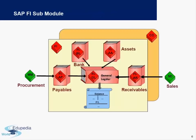Within the SAP Finance module we have various sub-modules: Accounts Payable, Accounts Receivable, Asset Accounting, and Bank Accounting. All of these different sub-modules flow into the General Ledger, which is one common place where all the financial figures are recorded. This then gives you the final Balance Sheet or Profit and Loss statement, which is published as part of the company's annual report.